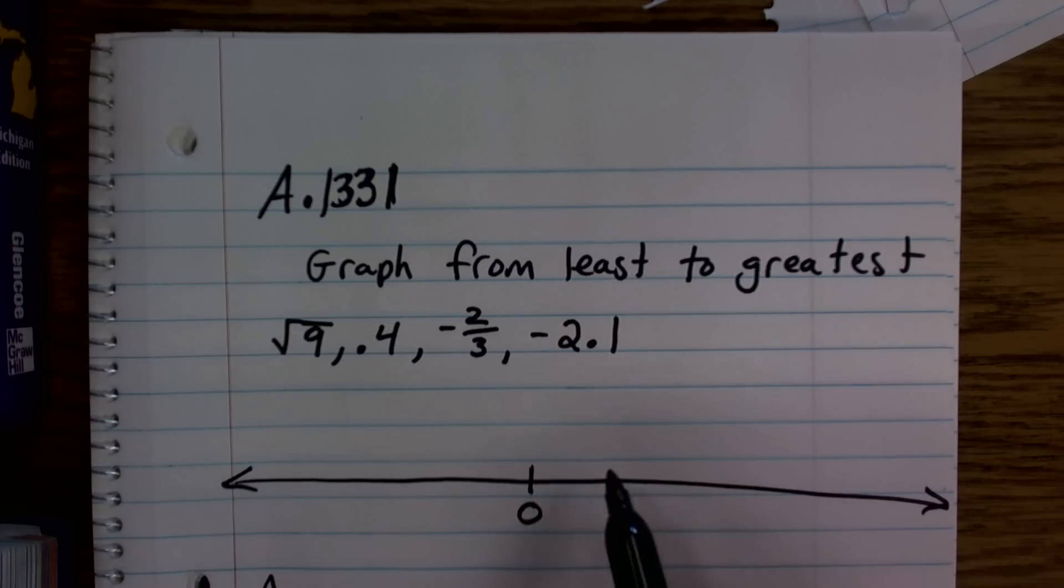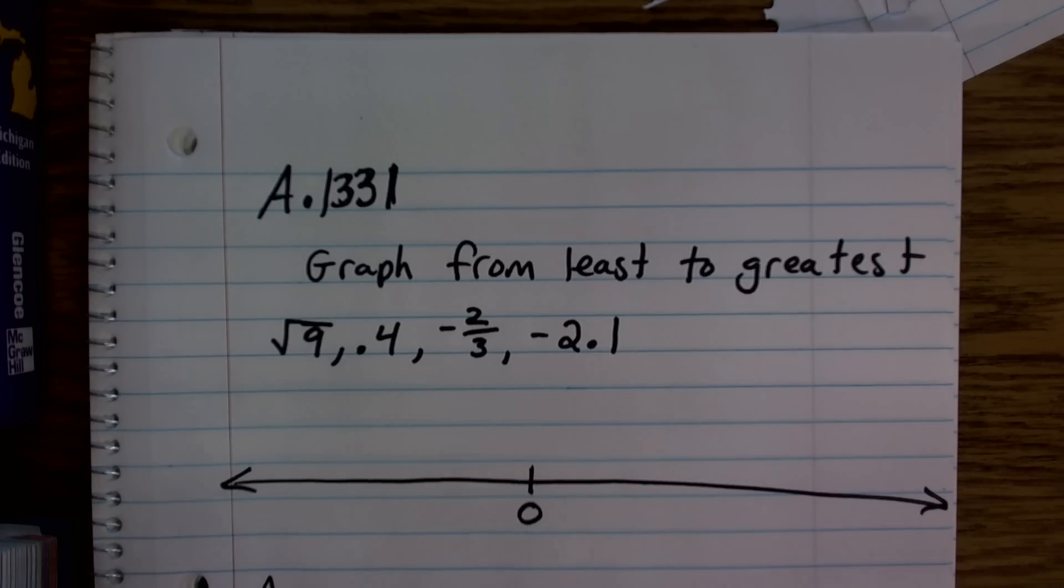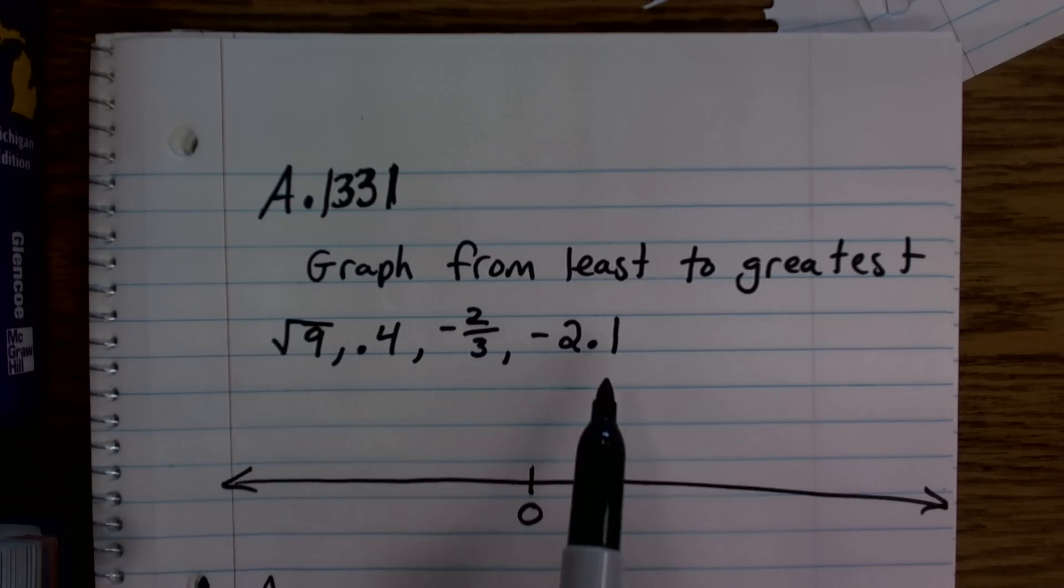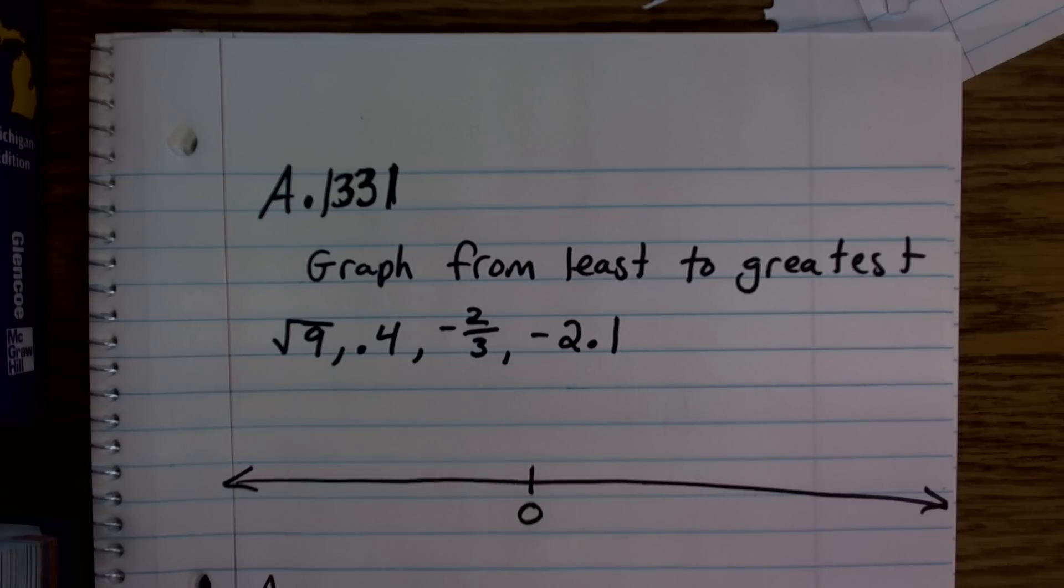So here I'm going to have 0, and let's just kind of think now, to make our number line, we've got to see what are going to be kind of our extremes. What is going to be the largest number and the smallest number? Well, just by estimating, I know the square root of 9 is going to go up to positive 3, and then I'm going to have to go down as far down as negative 2.